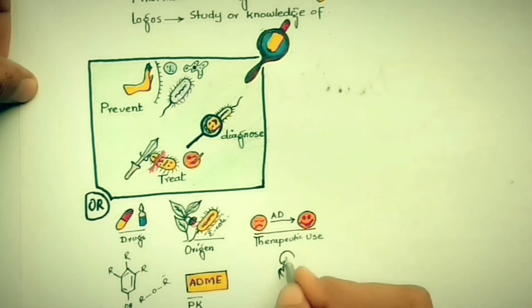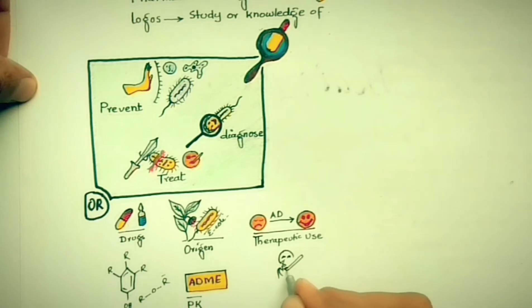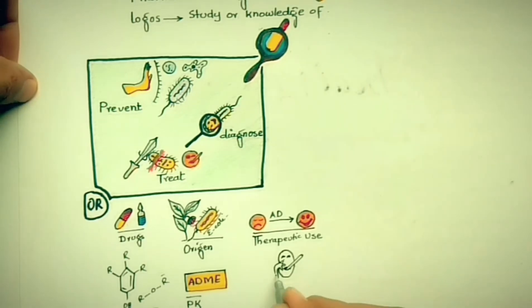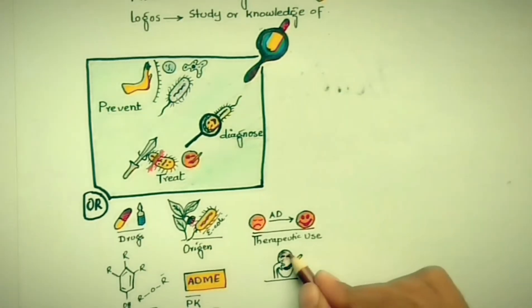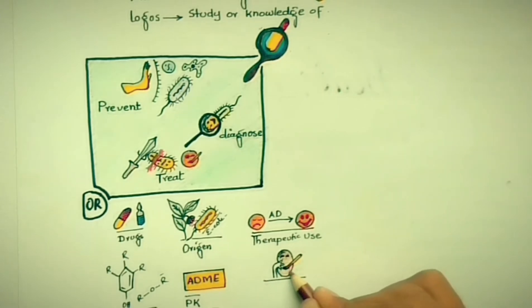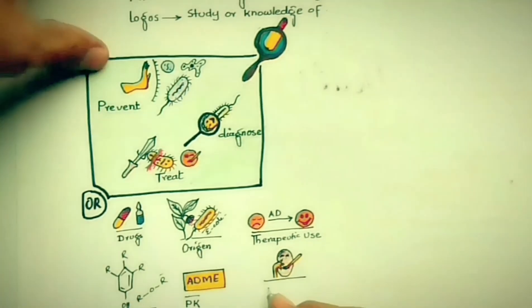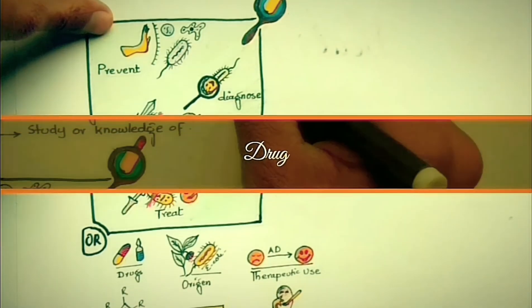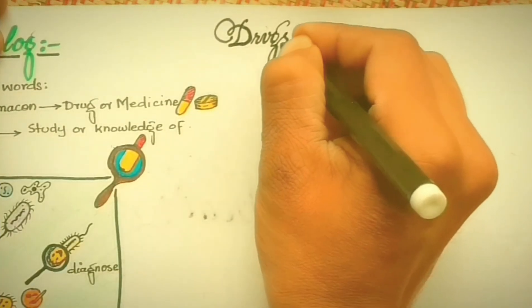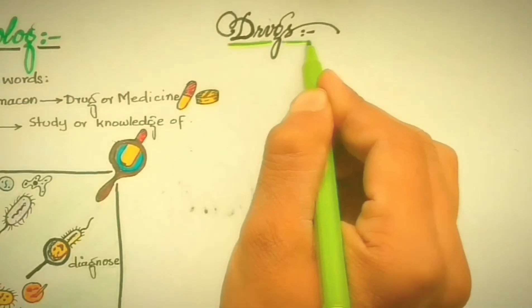Lastly, pharmacology studies the toxic effects of drugs on the body, like nephrotoxicity, hepatotoxicity, ototoxicity, and other undesirable effects that a drug can cause. That was about pharmacology.